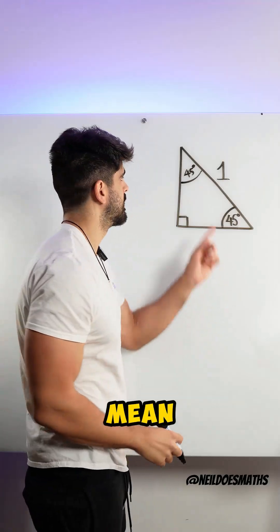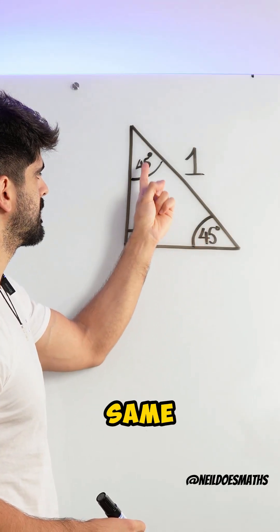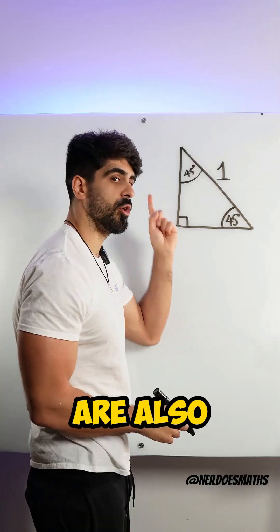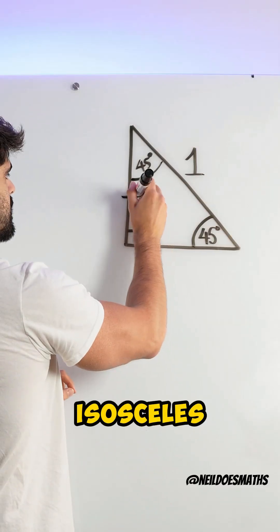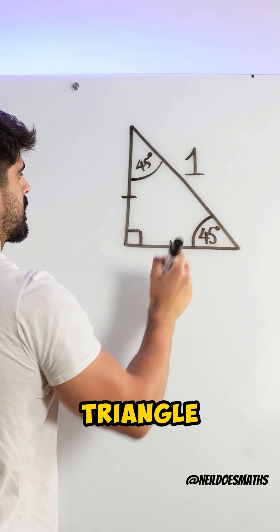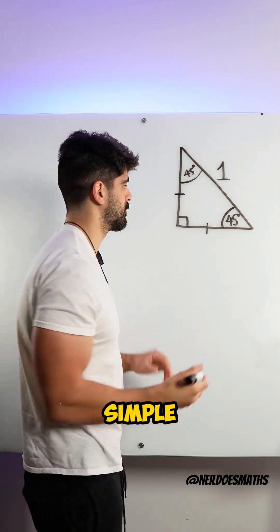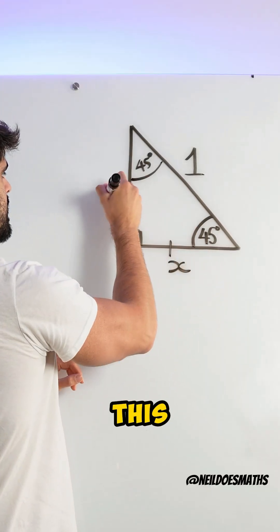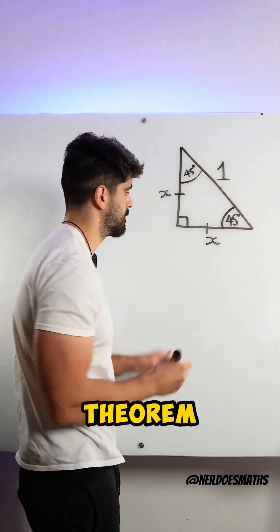Now, what does that mean? If both of these angles are the same, it means the opposite lengths are also the same — it's an isosceles triangle. So, to find them is pretty simple. I can call this x and call this x and use Pythagoras' Theorem.